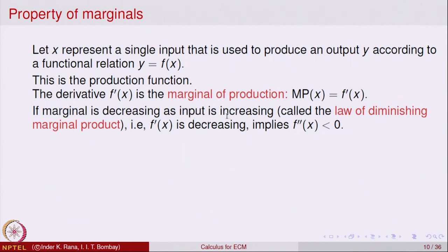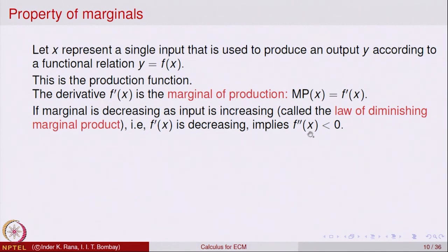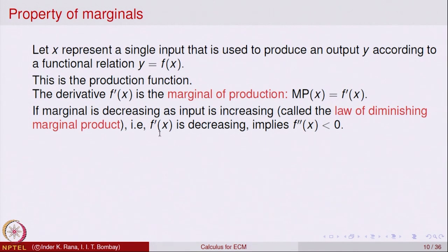If the marginal is decreasing as input is increasing, that is called the law of diminishing marginal product. This means f' is decreasing, which implies the derivative of f', that is f'', should be less than 0. The point being made is that saying something about the marginal reveals a property of the second derivative of the production function.